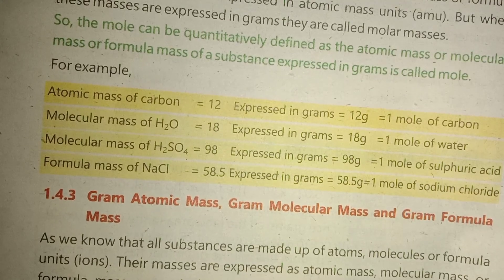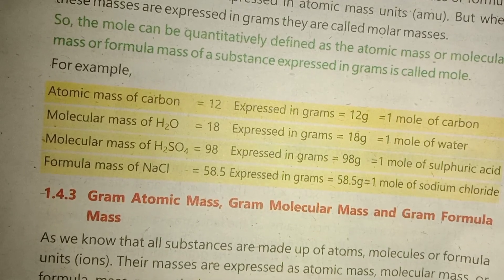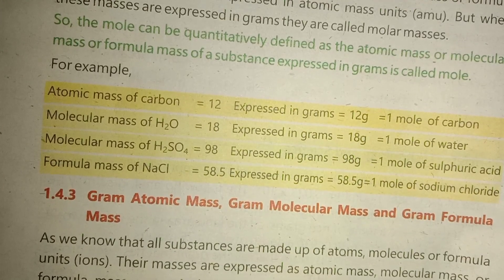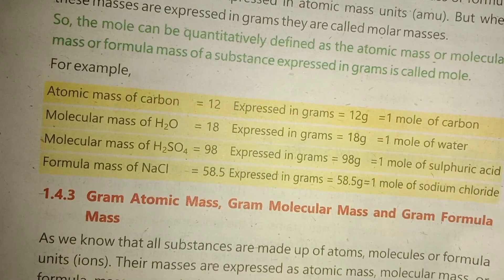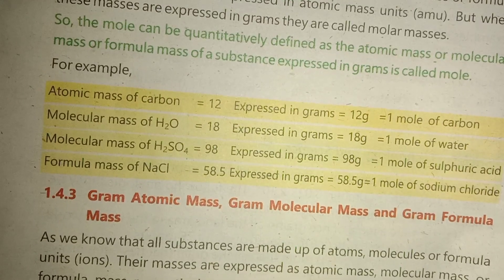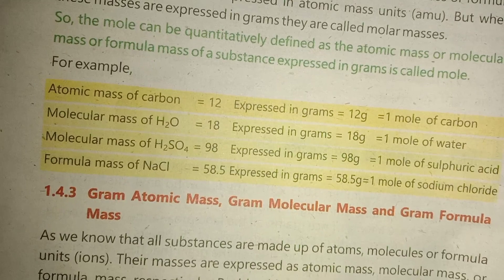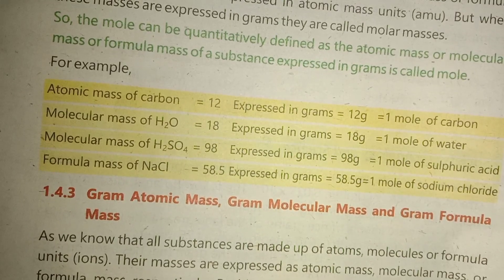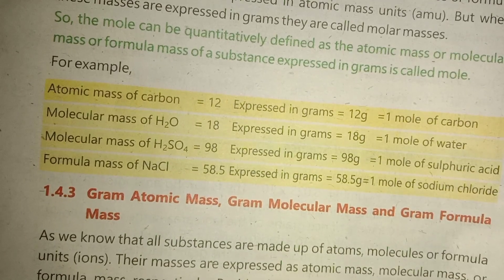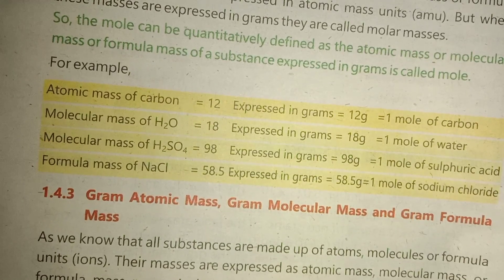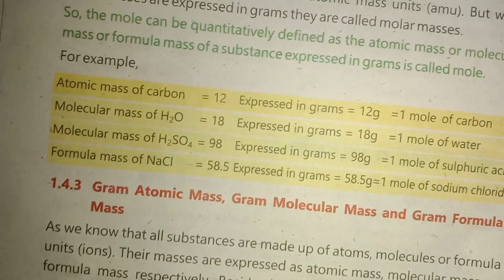Another simple example: the molecular mass of H2SO4 (sulfuric acid) is 98 atomic mass units, so 98 grams equals 1 mole of sulfuric acid. And for NaCl (sodium chloride), the formula mass is 58.5, so 58.5 grams equals 1 mole of sodium chloride.